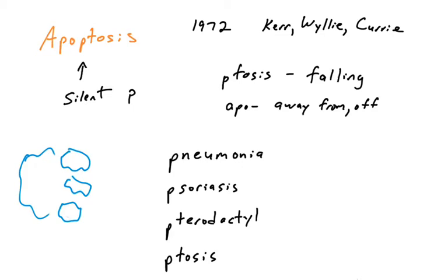Of course, people understand you if you say apoptosis, but that is not the origin of the term. There are other types of cell death, such as pyroptosis — you wouldn't pronounce that second P, or else you'd be saying pyroptosis, which seems a little funny. Pyroptosis is actually another type of cell death, which we may get into in later videos.